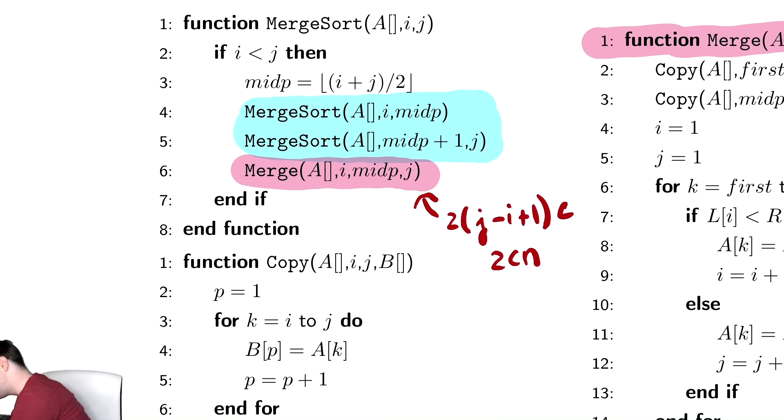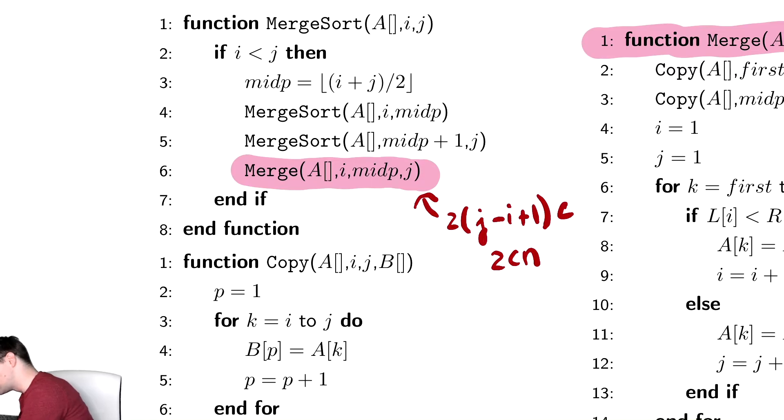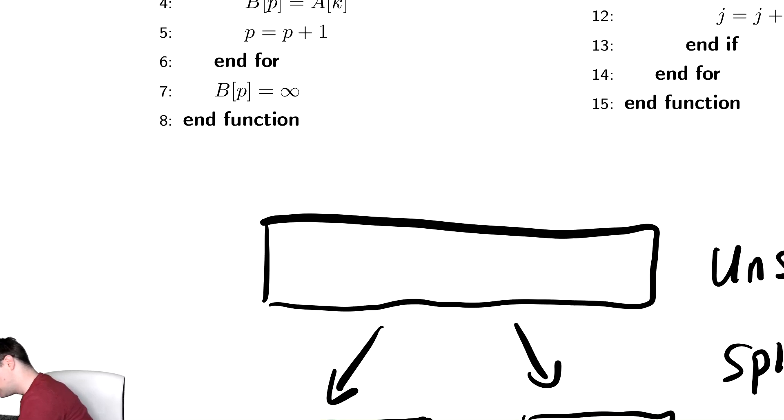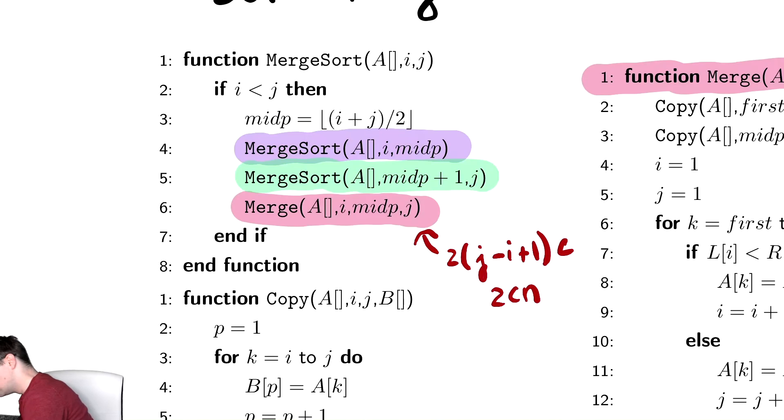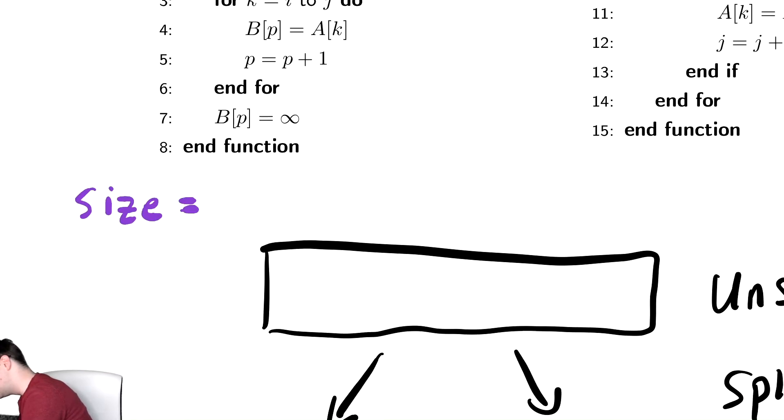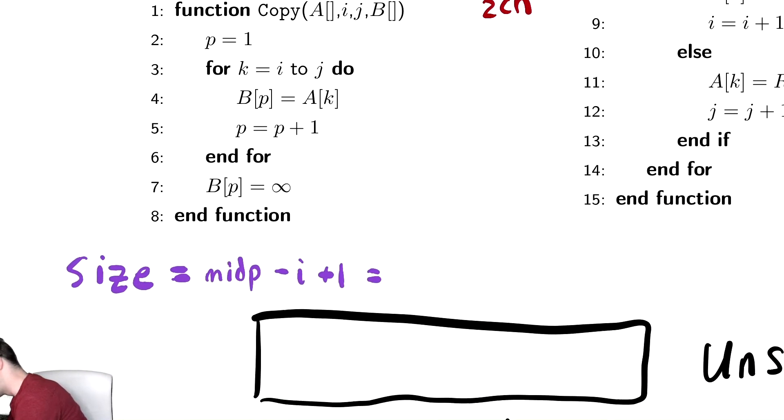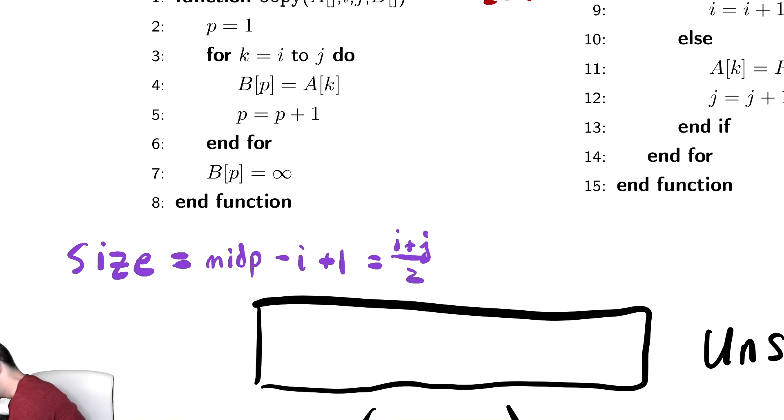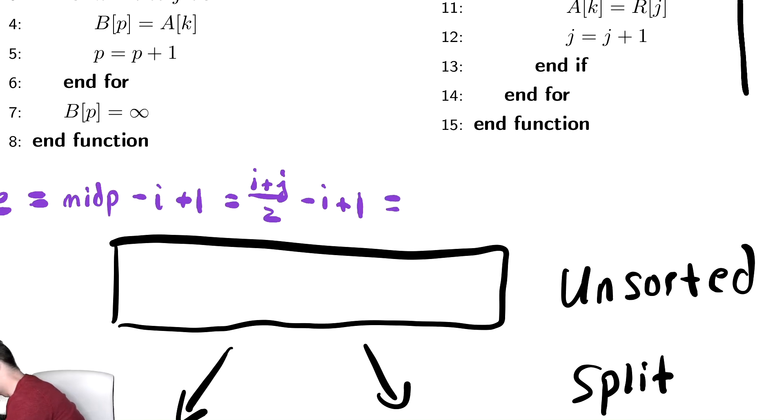For the first recursive call, let's figure out the size. Just to make our lives easier, we're going to highlight those in different colors. The first one I'm highlighting in purple, and the next one in green. For the purple recursive call, the size is midp minus i plus one, which should look really similar to what we did with binary search. Midp was i plus j divided by two. So i plus j divided by two minus i plus one. Combine everything into a single fraction and you get j minus i over two plus one, which is really close to n over two, just like we did before.